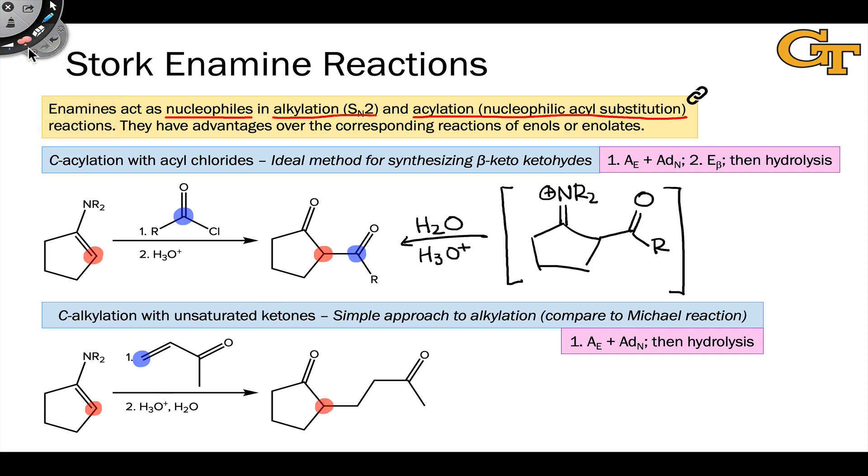In other words, conjugate addition occurs selectively because of the relative softness of the enamine nucleophile. Again, we need hydrolysis to essentially break the carbon-nitrogen double bond and replace it with a carbon-oxygen double bond.